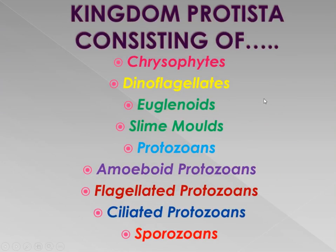These are the organisms present within Kingdom Protista: chrysophytes, dinoflagellates, euglenoids, slime molds, and protozoans. Within protozoans there are four types: amoeboid protozoans, flagellated protozoans, ciliated protozoans, and sporozoans. There are questions asked from these organisms in the Class 12 CBSE exam, so take a snapshot — it is very important from the exam point of view.